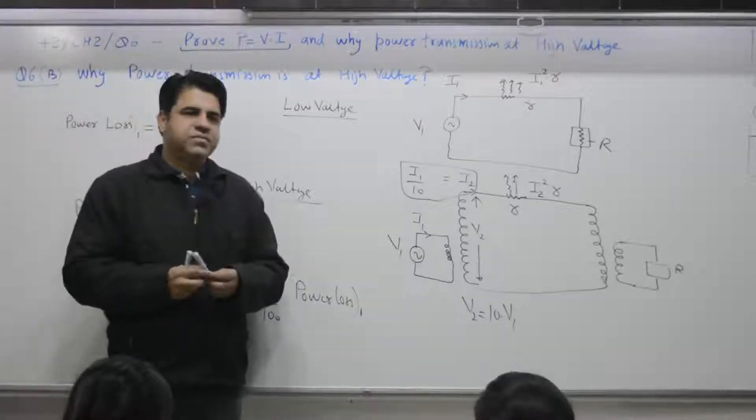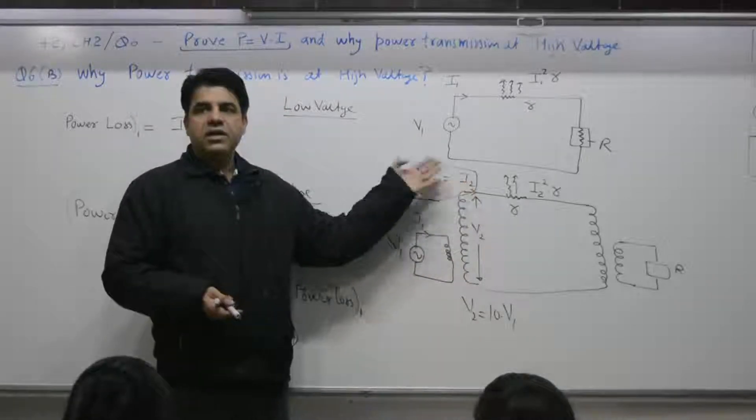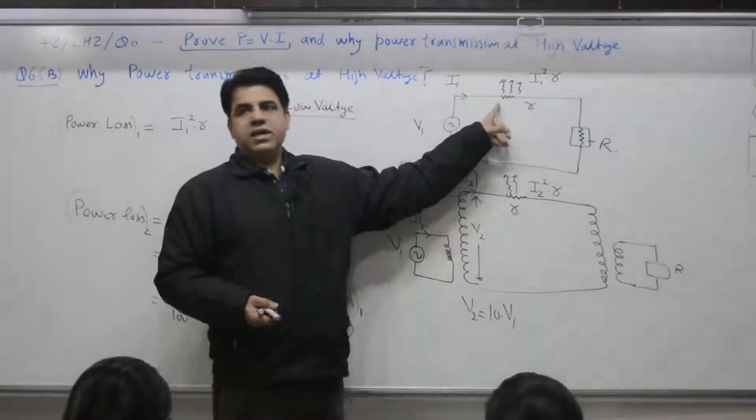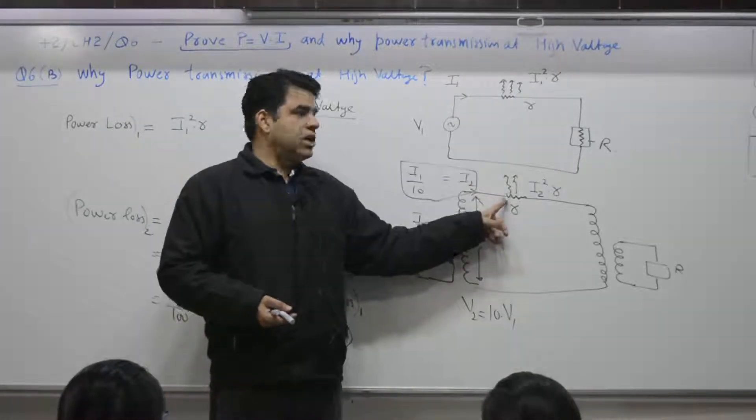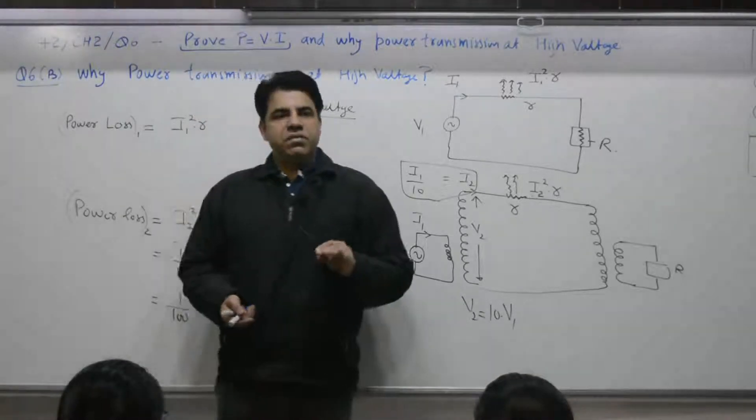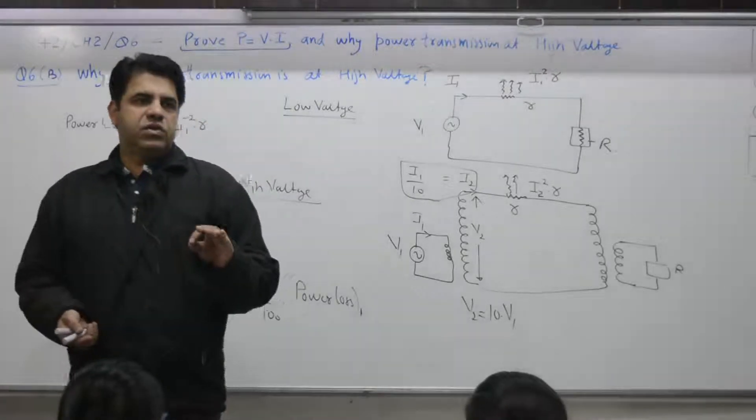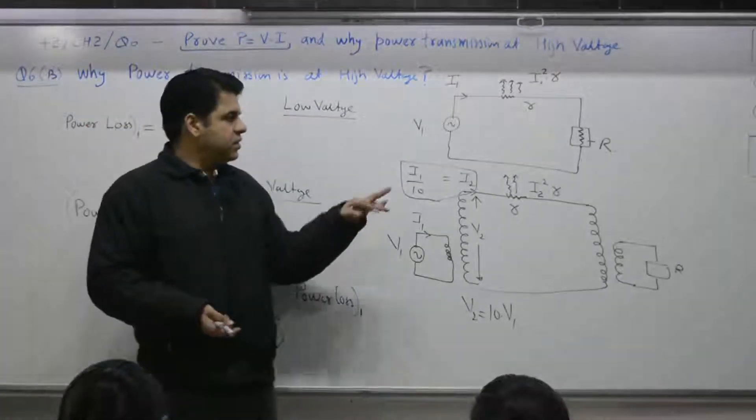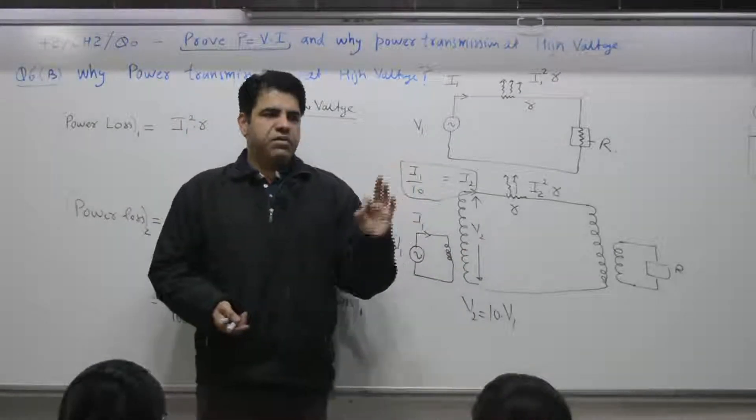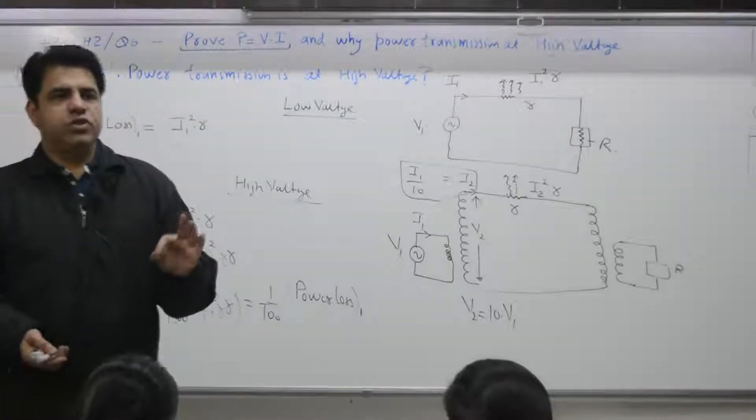That means what? Advantage of stepping up and then transmitting is for this particular example. If it is 100 rupees here, loss. In this case, it is only 1 rupee. That is why power loss case number 2. That is why power transmission is at a high voltage. 2009-2010 paper if you see. This question was there in both 3 marks. Why power transmission is at a high voltage? Time with you is 3 minutes to write.